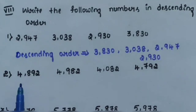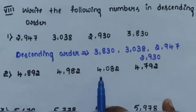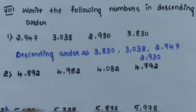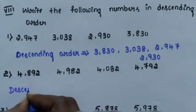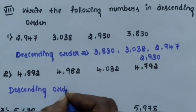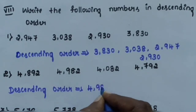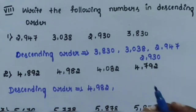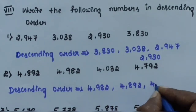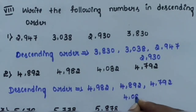Question number 2: arrange 4,892; 4,982; 4,082; and 4,792 in descending order. Descending order means arrangement from greatest to smallest. 4,982 is the greatest number. The order is: 4,982; 4,892; 4,792; and 4,082.